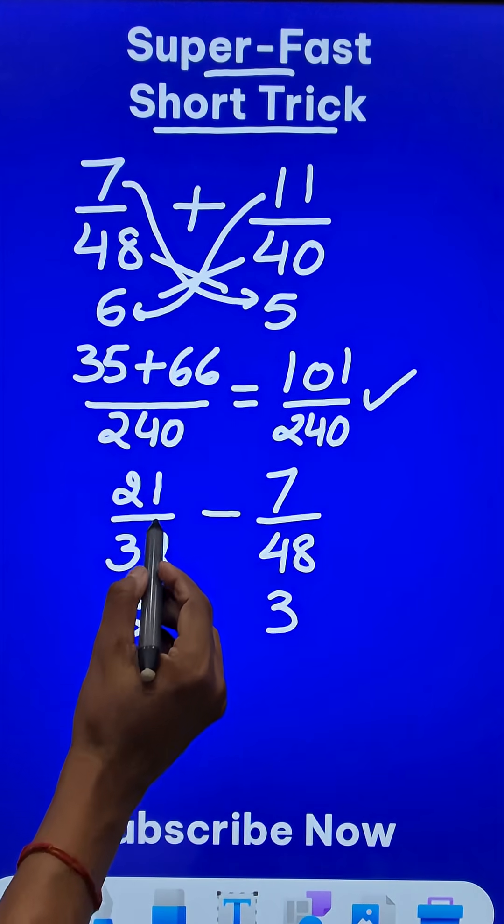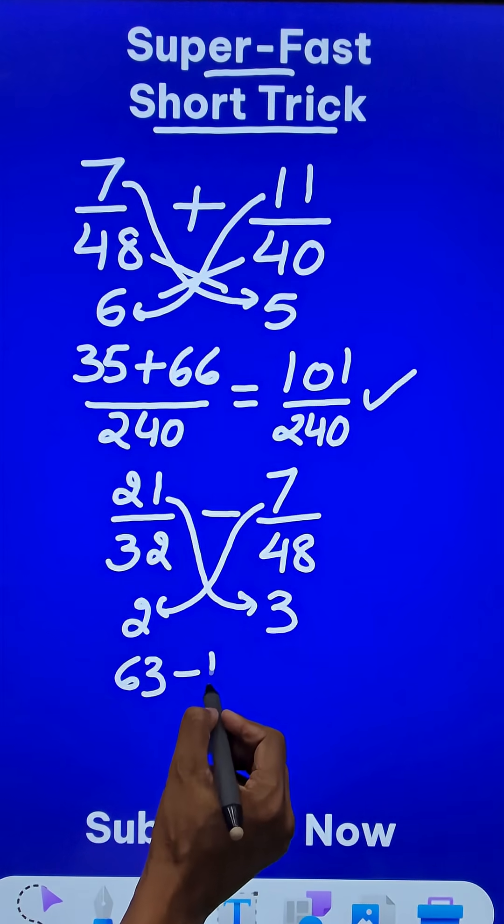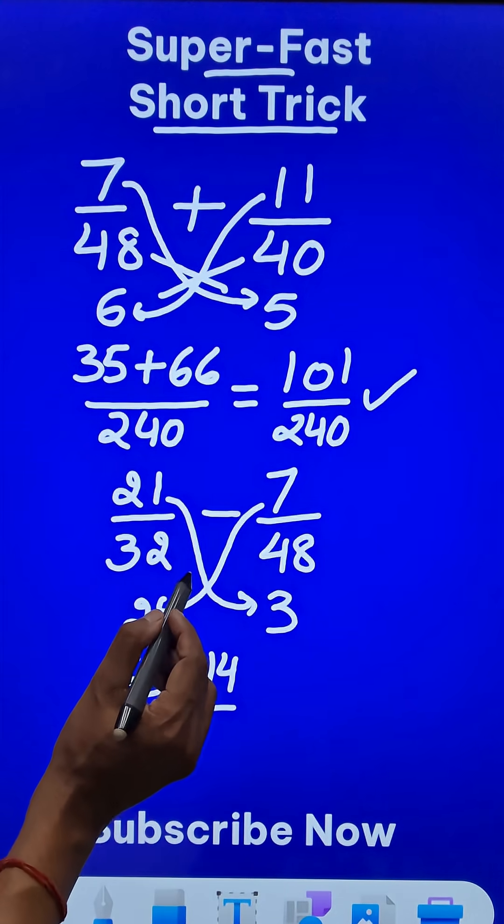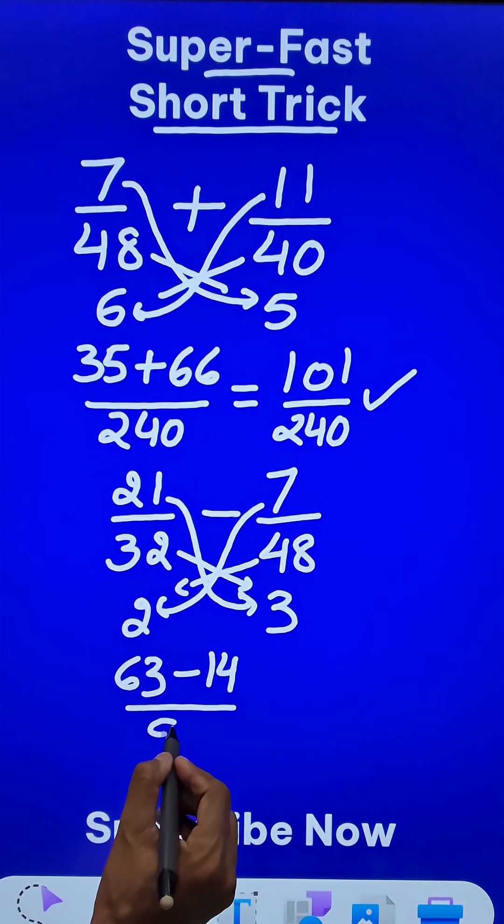Likewise, if this is the problem, then 21 times 3 becomes 63 minus 7 times 2 becomes 14. And in the denominator, 48 times 2 or 32 times 3, both of them will give you 96.